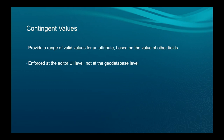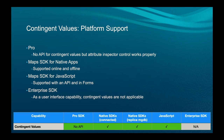Contingent values provide a set of valid values depending on either the subtype or other values. For example, when you select wood as the material for a pole, you can have paint or creosote as the treatment type. But if you change the pole's material to something else, creosote no longer shows up as a valid option. These rules are enforced at the editor UI level. In Pro, there's no API form but it works through the attribute inspector control. Maps SDK for Native Apps has full support both online and offline. In JavaScript, we have both API and forms support.